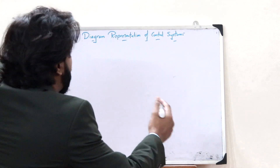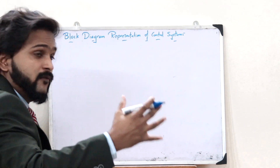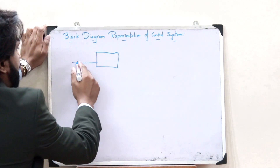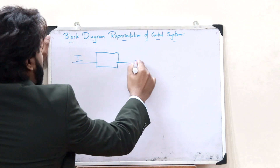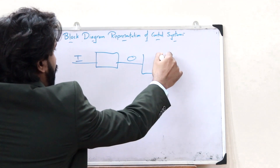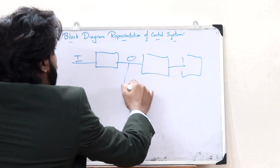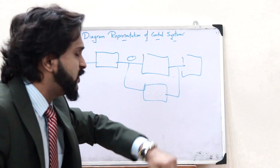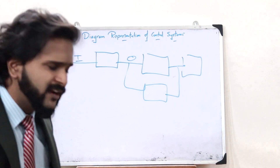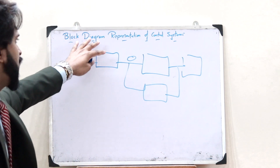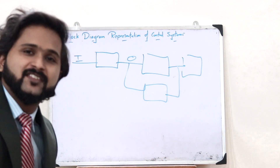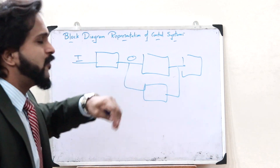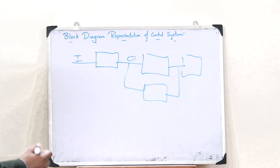Let us assume that we are now drawing a particular control system and we can represent that control system using certain blocks — one block like this, where we give a particular input and get a particular output. We can have another block here, and another block here, and maybe another block here. This is a block diagram representation of a particular control system — a pictorial representation using blocks.